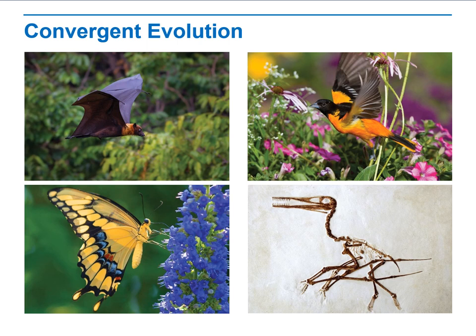Large grassland birds such as emus, rheas, and ostriches are also examples of convergent evolution. What similar structures evolved in the animals shown? All of these animals have wings, and the wings allow the animals to fly through the air.